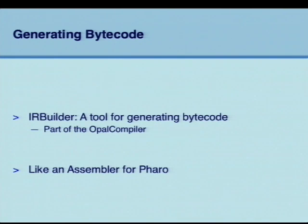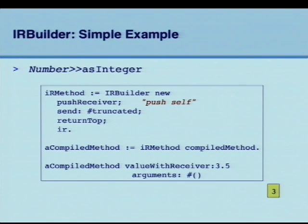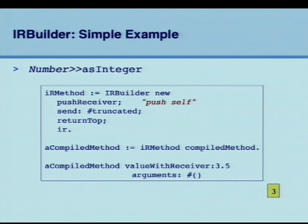The main object here is the IR builder — the object you should talk to in order to create an IR method, like an assembler. You instantiate it, push the receiver (push self), send `truncated`, and return the top. Then you call `ir` on the IR builder. To the IR you can send `compiledMethod`, then do `valueWithReceiver: 3.5` and you get 3.